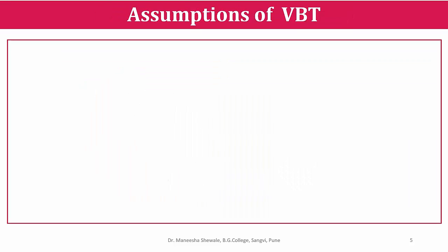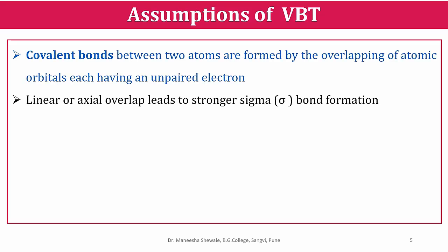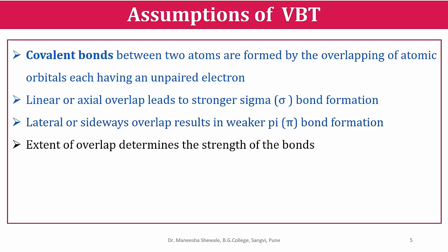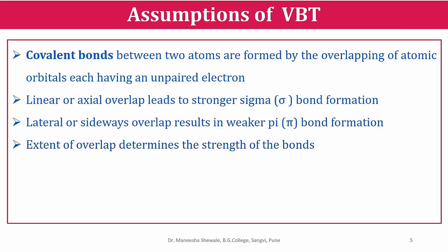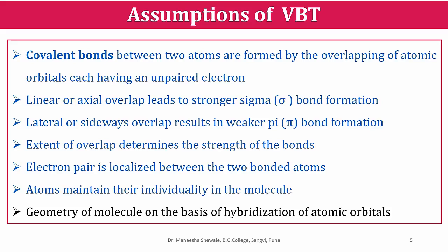The valence bond theory is based on the following assumptions. The bond formed between two atoms is a covalent bond, formed by the overlapping of atomic orbitals where each atomic orbital contains an unpaired electron. This overlap can be of two types: a linear or axial overlap which results in a sigma bond, and a lateral or sideways overlap which results in a pi bond, which is weaker than the sigma bond. The extent of overlap determines the strength of the bond — greater the overlap, stronger the bond. The electron pair during bond formation is localized between the two bonded atoms, and after the molecule is formed the atoms still maintain their individuality. The geometry of molecules can be explained by VBT on the basis of hybridization of atomic orbitals.